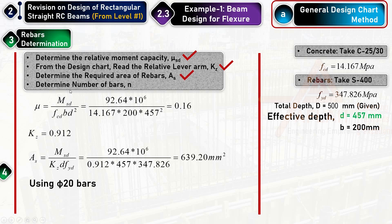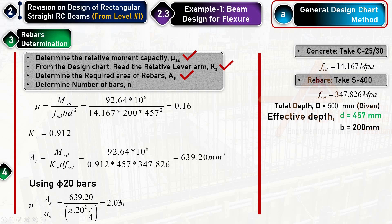The number of bars is calculated as the required area divided by the area of a single bar: 639.2 / (π/4 × 20²) ≈ 2.03. Since we cannot use a fraction, we round up to 3 bars to ensure the provided area exceeds the required area. So we provide 3Ø20 bars.